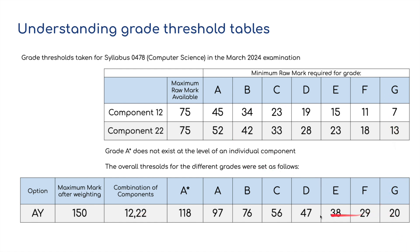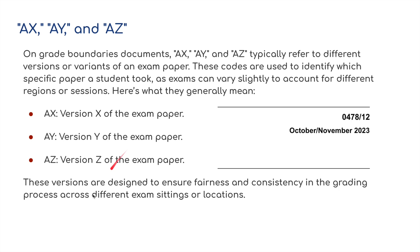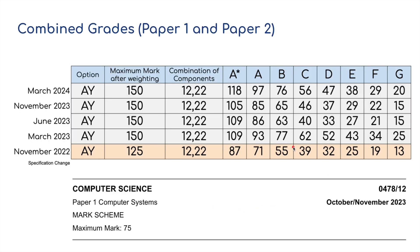Obviously the further down you go, the lower your mark is going to be. Just a recap on A-X, A-Y and A-Z: on grade boundary documents these typically refer to different versions or variants of the exam paper. These codes identify which specific paper a student took, as exams can vary slightly to account for different regions or sessions. We're on the 0478 paper October/November 2023, variant 1-2, which is generally a Y. These versions are designed to ensure fairness and consistency. Combining both grades of paper one and paper two, I'm looking back to November 2022 where we were on the old syllabus. The current syllabus runs from 2023 all the way up to 2025.